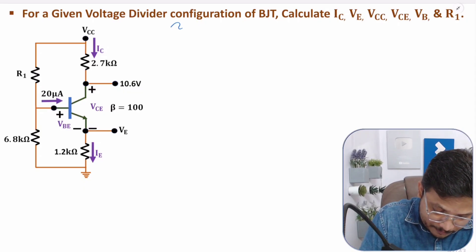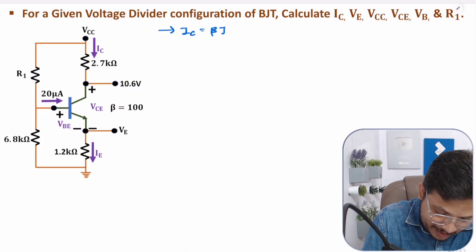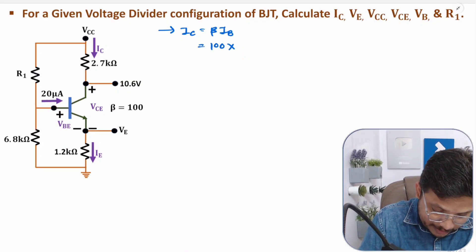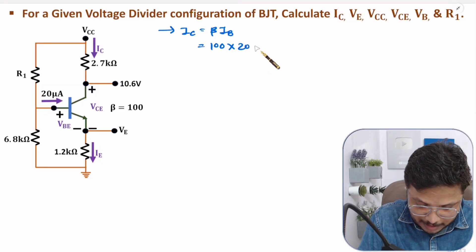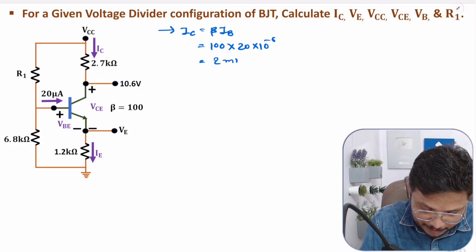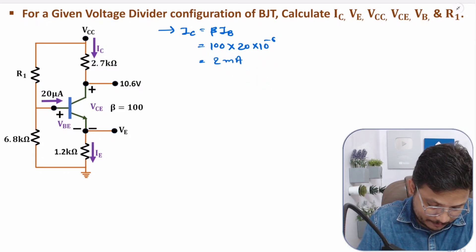IC can be calculated based on beta and IB. IB is given. IC equals beta times IB. Beta is 100 and IB is 20 microamps. Solving this gives IC equal to 2 milliamps.